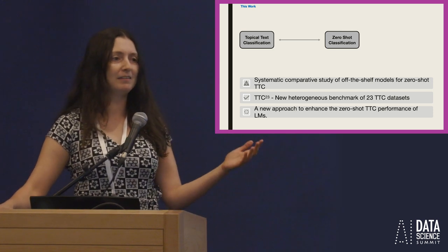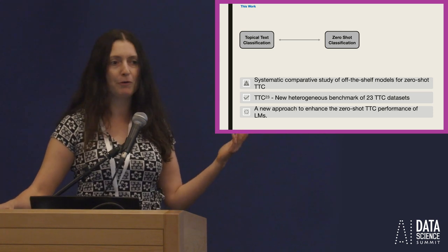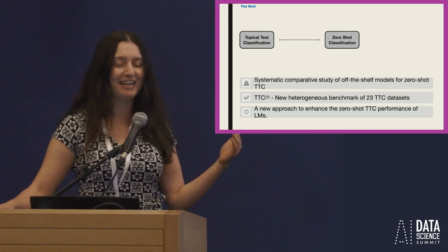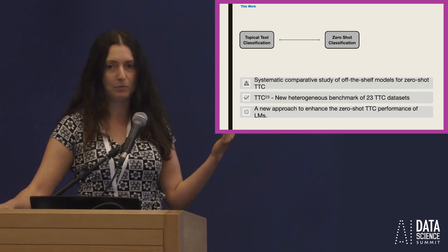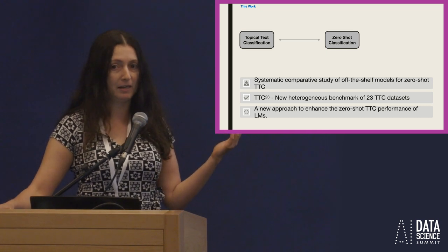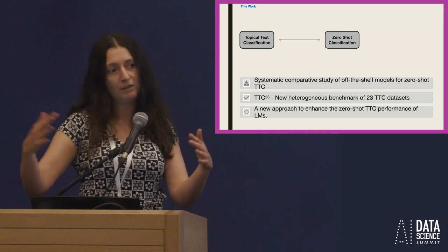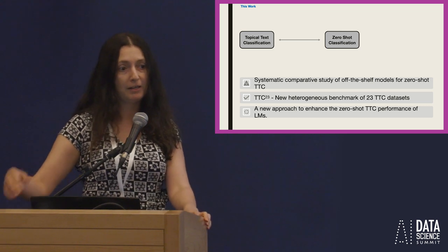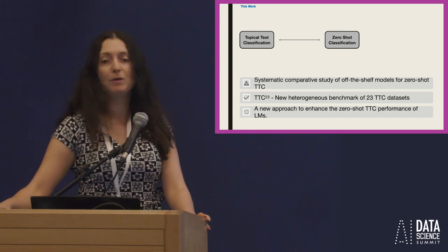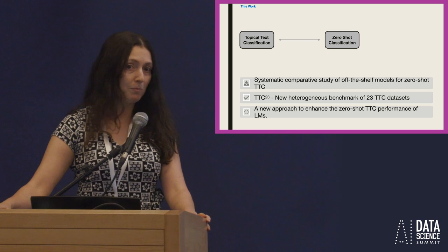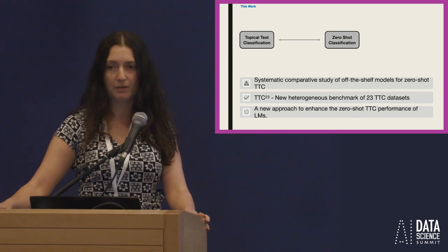This was exactly the main objective of the current work: to perform a systematic study and compare different approaches. For this purpose, we created a relatively large benchmark of topical text classification datasets, composed of 23 datasets. We used this benchmark to evaluate the different approaches and also suggested a new approach for further improving the current performance of zero-shot text classification models.